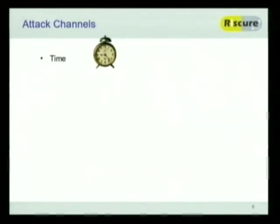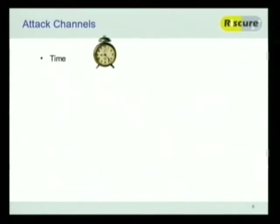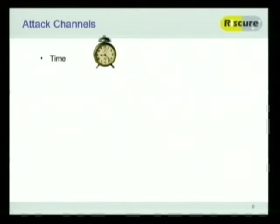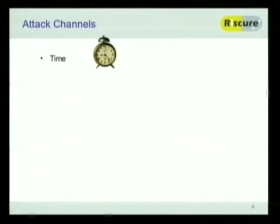Just to go into a few of the attack channels you can think of: one early one is timing. Let's say you have a process and it takes a certain amount of time, and depending on what's going on inside the algorithm, it takes 20 milliseconds or 30 milliseconds. When you have this kind of knowledge, just by measuring the time you know whether it's done process A or process B. And if this depends on some kind of secret being processed in your chip, then you've recovered that secret.